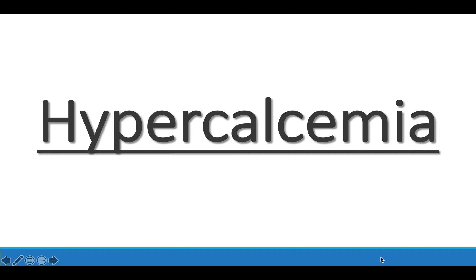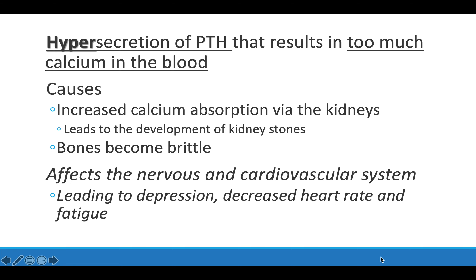Now let's talk about disorders of the parathyroid hormone. One is hypercalcemia. The parathyroid hormone and calcitonin — which comes from the thyroid — together regulate blood calcium levels. Hypercalcemia is when there is hypersecretion of the parathyroid hormone, meaning too much calcium in the blood. This causes the kidneys to take in a lot more calcium, leading to kidney stones. Bones can develop holes and become very weak and easily breakable. It can also affect the nervous and cardiovascular system, causing depression, decreased heart rate, and fatigue.